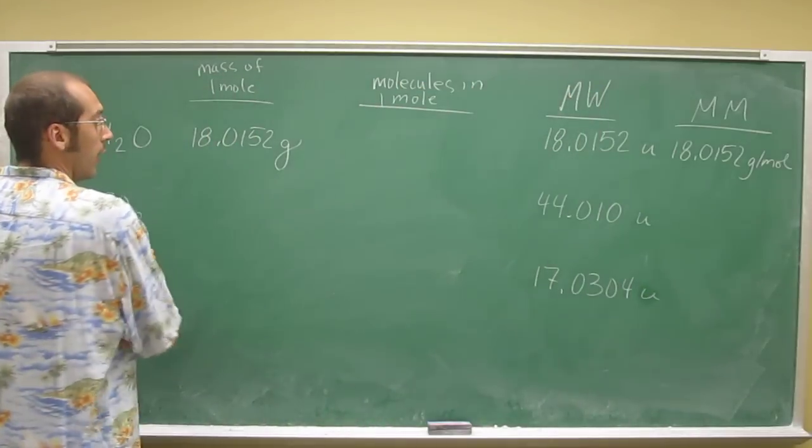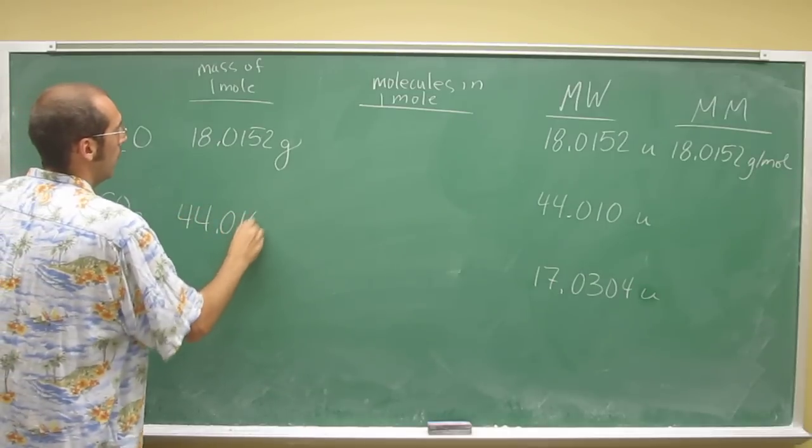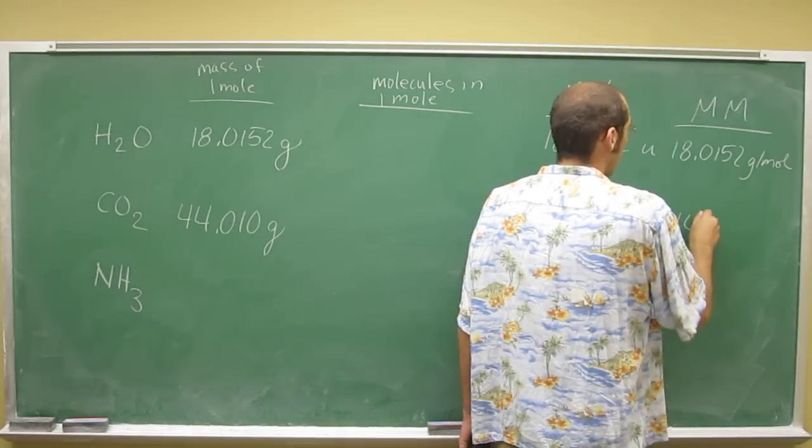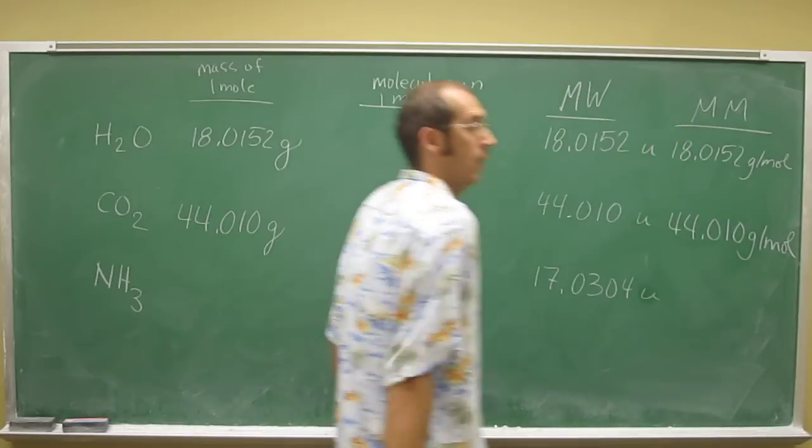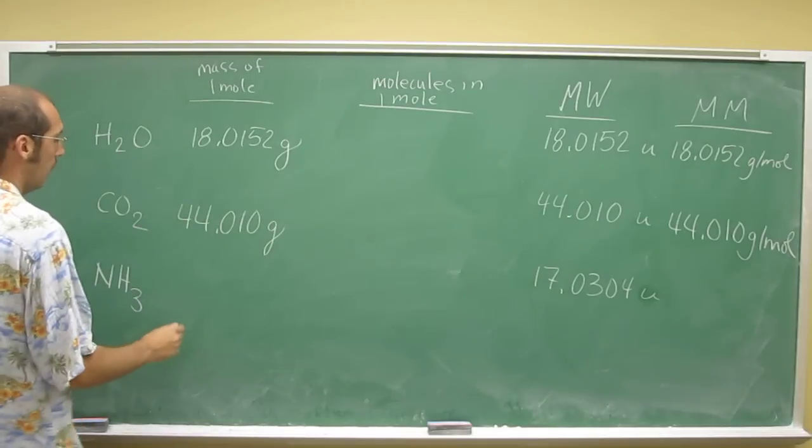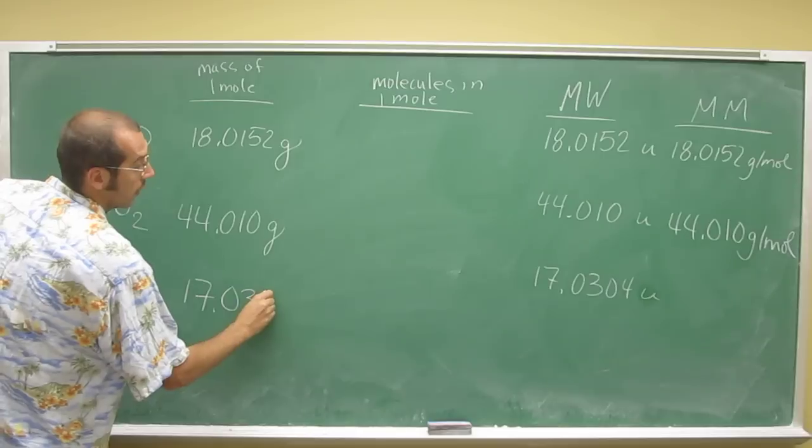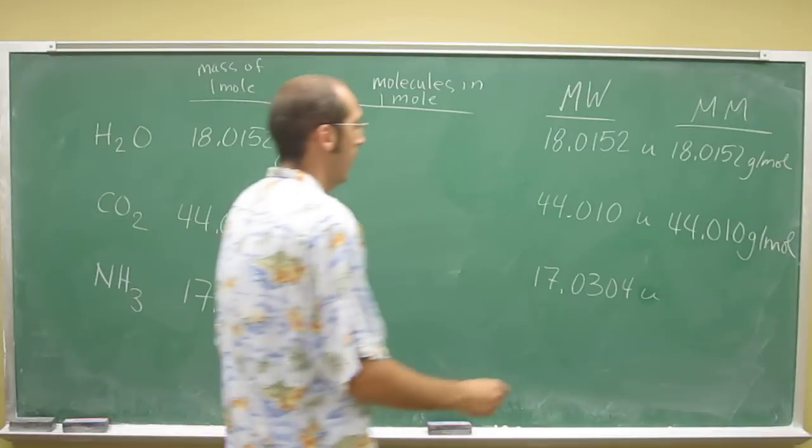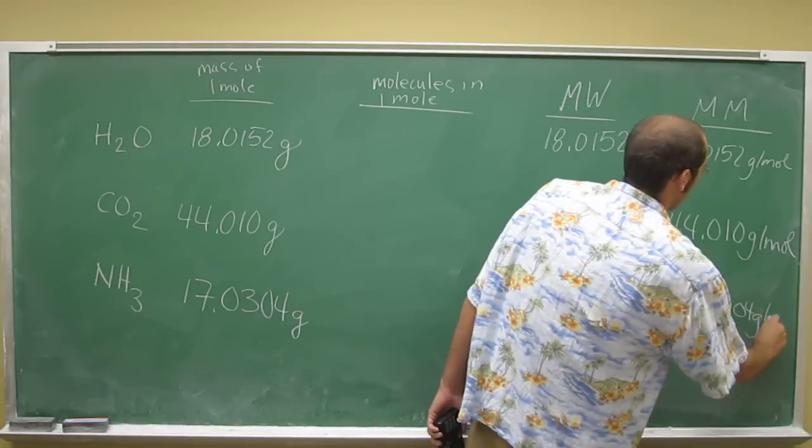So carbon dioxide's mass of one mole is going to be 44.010 grams. Its molar mass is going to be 44.01 grams per mole. Ammonia's mass is going to be 17.0304 grams per mole. So its molar mass is going to be 17.0304 grams per mole.